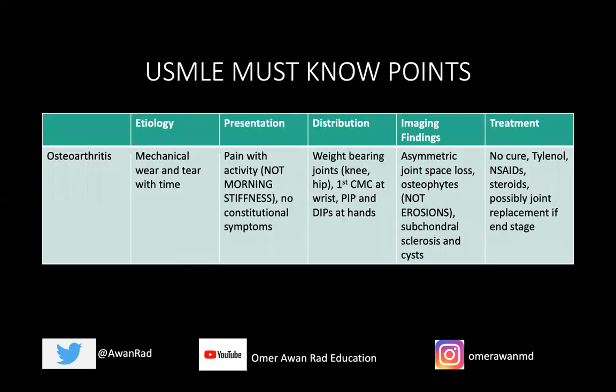So the take-home points that you must know for the USMLE. Osteoarthritis is a result of mechanical wear and tear from chronic repetitive microtrauma that leads to cartilage destruction. The pain happens with activity — it's not morning stiffness like we see in rheumatoid arthritis or the seronegative spondyloarthropathies. It occurs with activity, gets better with rest, no constitutional symptoms. The weight-bearing joints are the ones that are going to be involved: the knee, the hip, in the wrist the first carpal metacarpal joint, maybe the triscaphy joint, and in the hands the PIP and the DIP joints.